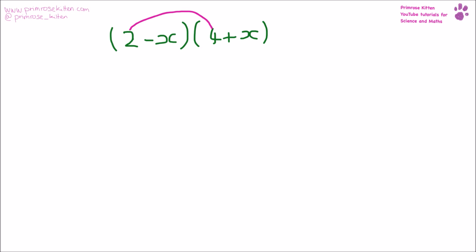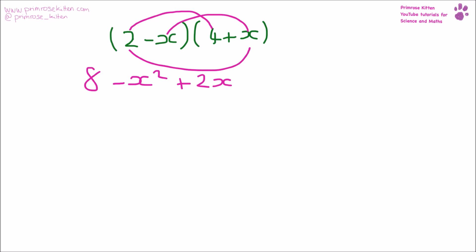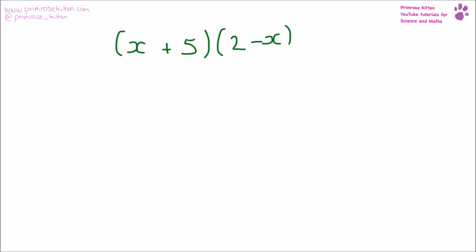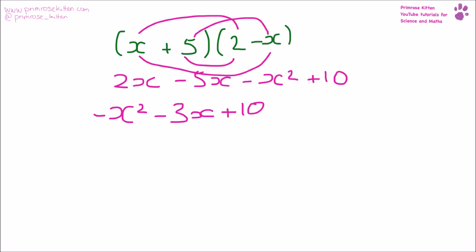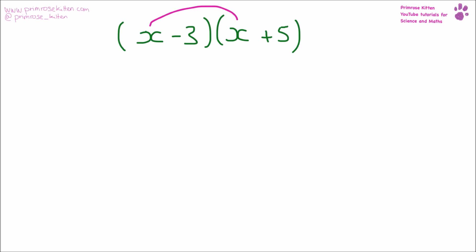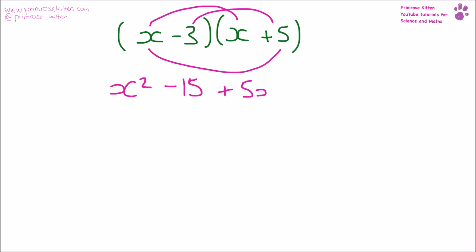Doing this one first we get 8 minus x², plus 2x minus 4x. Putting all of that together: minus x² minus 2x plus 8. For the next one: 2x minus 5x gives minus x², plus 10, giving minus x² minus 3x plus 10.